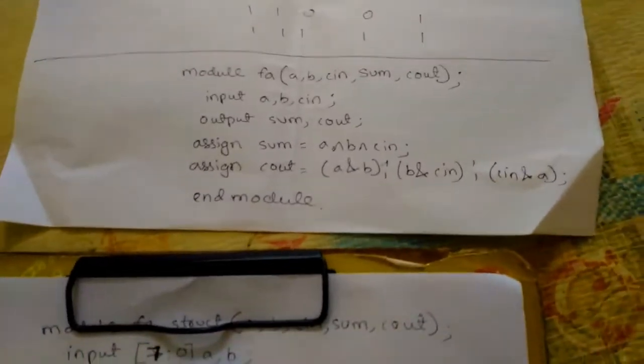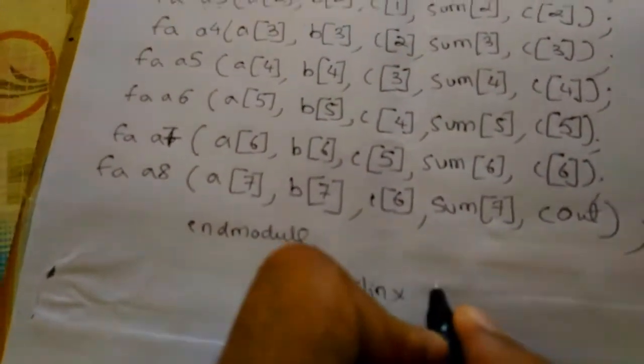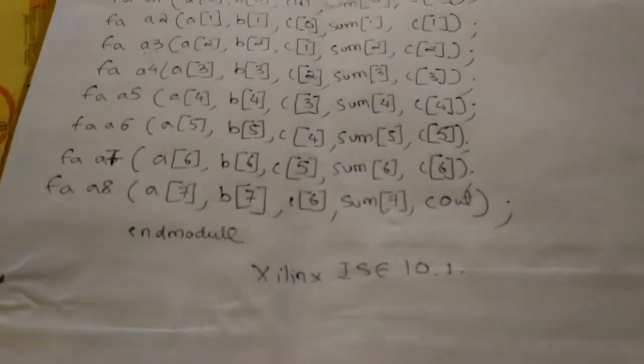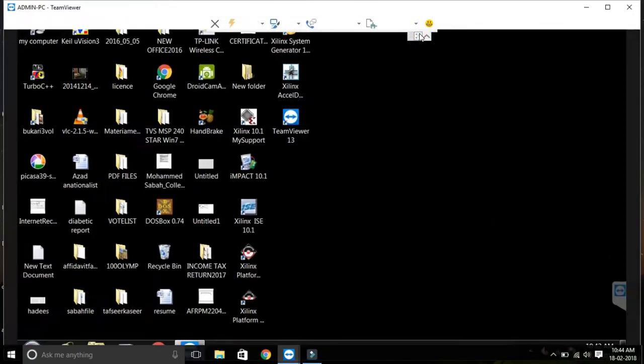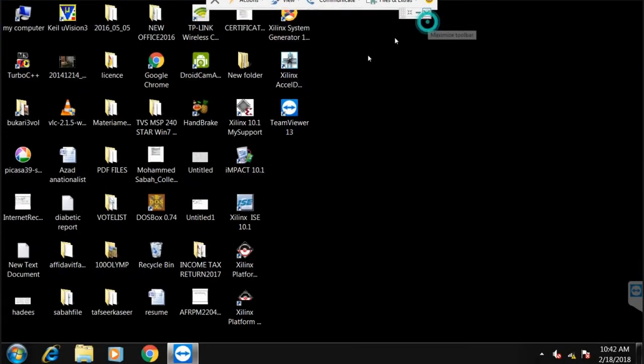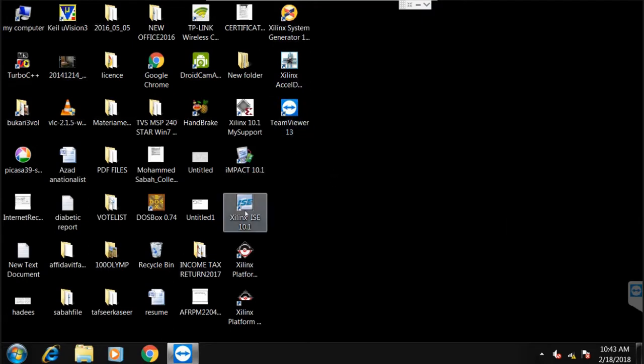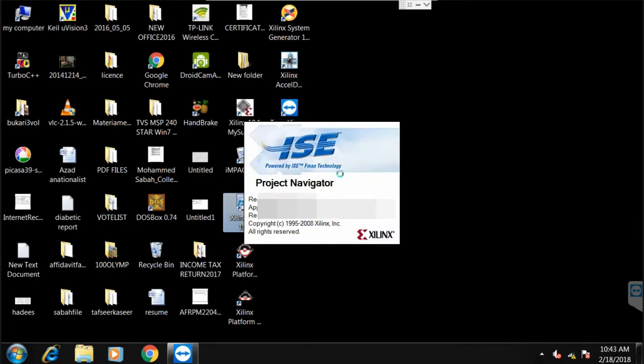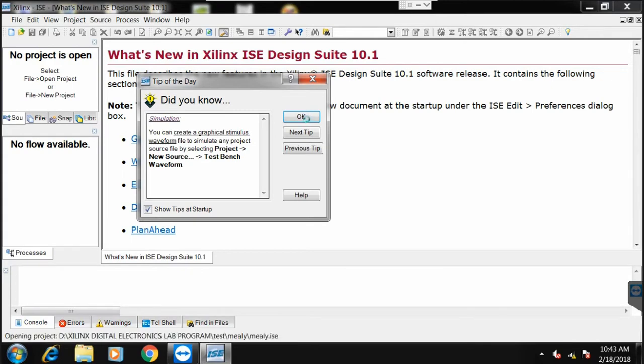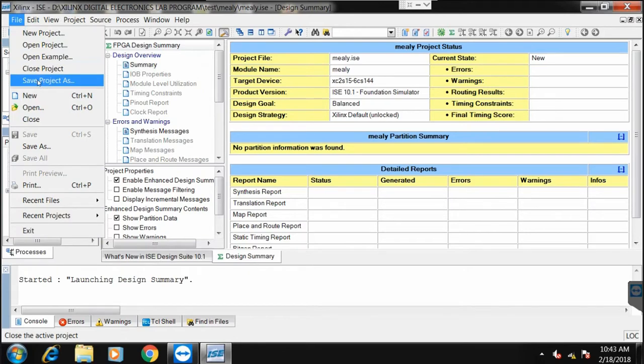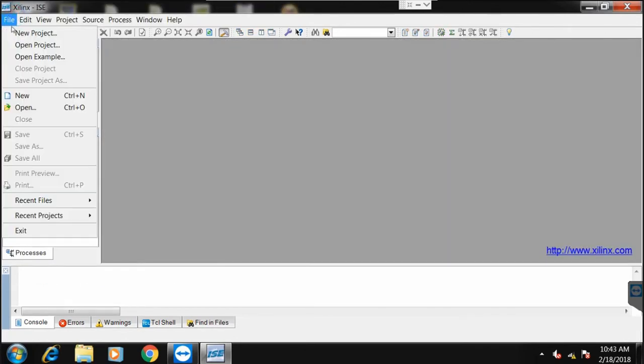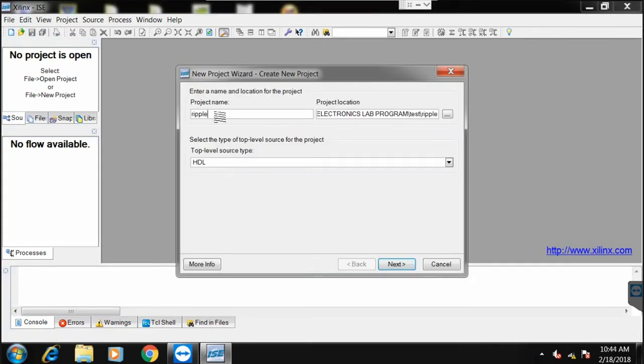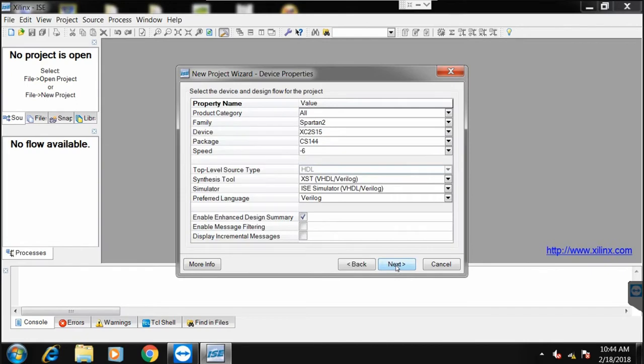This is the complete program. Now I will execute this program in the Xilinx ISE 10.1 simulator. In order to open Xilinx, we have to click on the icon Xilinx ISE 10.1. Once the window is opened, click on the ok button on the tips of day. Click on close project if any project is open. Click on file, go to new project, write the name ripple_carry_adder. Click on next.